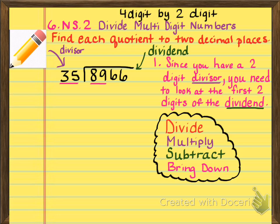So pause the video now so that you can write this first step here, which says since you have a two-digit divisor, that's the purple, you need to look at the first two digits of the dividend. So the reason we are looking at the 89 is because 35 is two digits. And then I've just given you a little reminder bubble here about how you divide. You're going to divide, multiply, subtract, and bring down. So you want to pause the video so that you can get all this written down, and then push play in a moment.